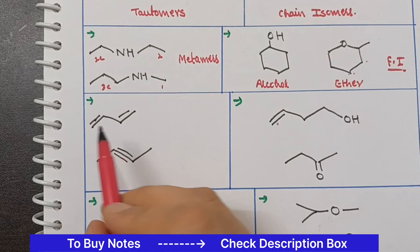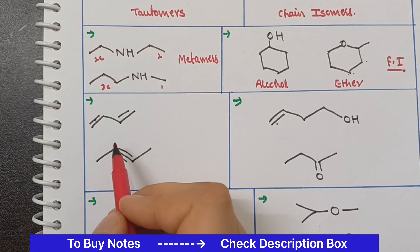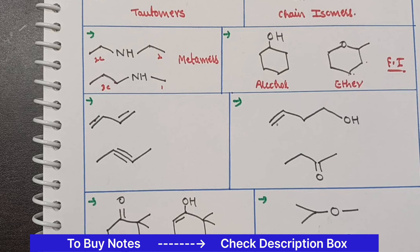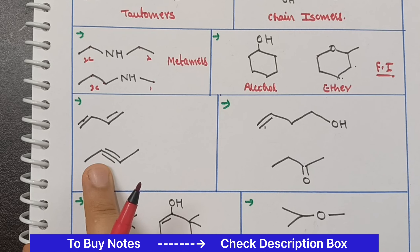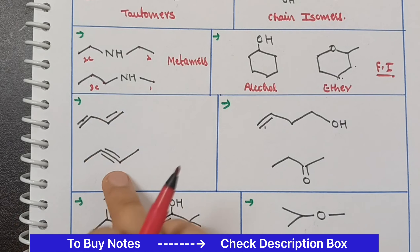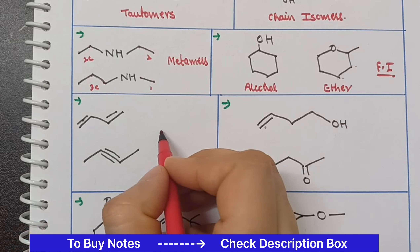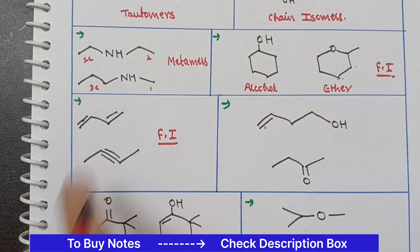Here we have C4H6 — 1, 2, 3, 4 carbons on each side and the same hydrogens. One compound is 1,3-butadiene (double bond) and the other has a triple bond. Keep in mind: double bonds and triple bonds are functional groups. Since the functional groups are different here, these are functional isomers. If a double bond and triple bond come together, it is functional isomers because double and triple bonds are considered functional groups.